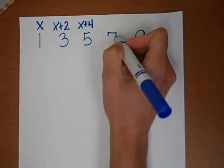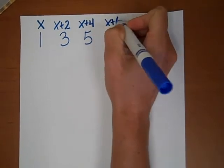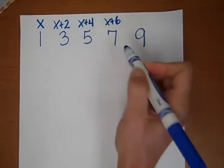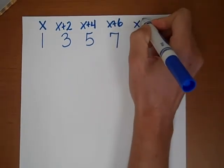What do I do to get the 7? x plus 6, because 1 plus 6 is equal to 7. And what do I do to get the 9? x plus 8.